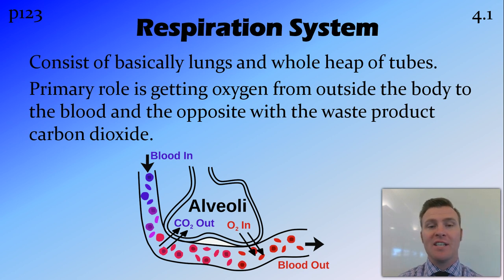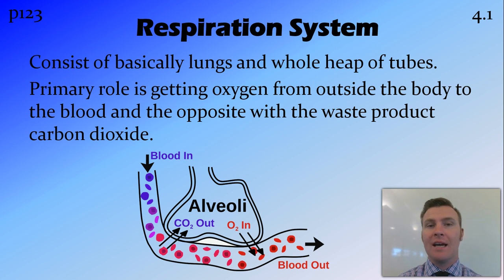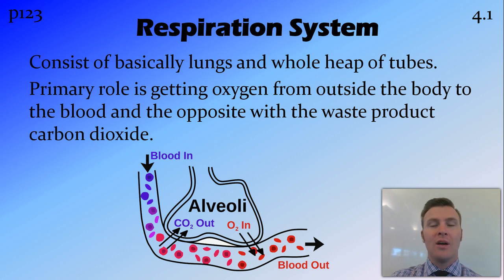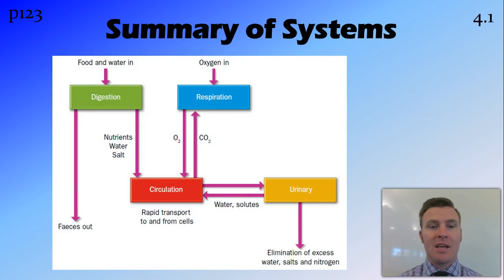The primary role of the respiratory system is getting oxygen into the body and carbon dioxide out. It does this in very small pockets inside the lungs called the alveoli. The wall of the alveoli is one cell thick, and the wall of the capillary surrounding that alveoli is also one cell thick, meaning there are only two cells between the blood in your body and the air in your lungs.